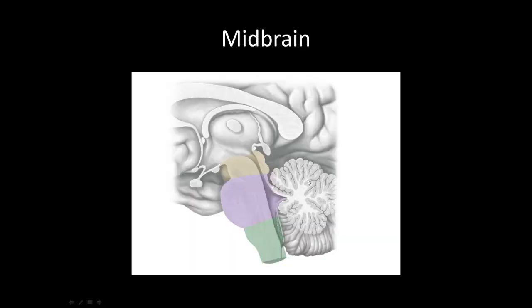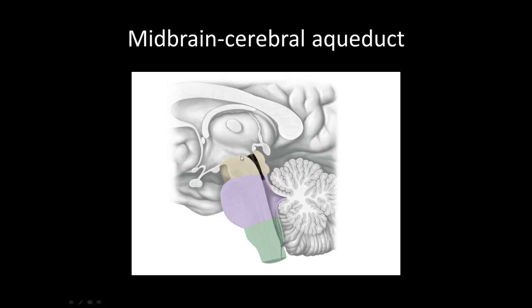On to the brainstem. The brainstem is made up of the midbrain in yellow, the pons in purple, and the medulla oblongata in green. First, we have the cerebral aqueduct — cerebrospinal fluid passes through this structure. The lateral ventricle flows through the interventricular foramen or foramen of Monroe into the third ventricle, then through the cerebral aqueduct in the midbrain into the fourth ventricle.